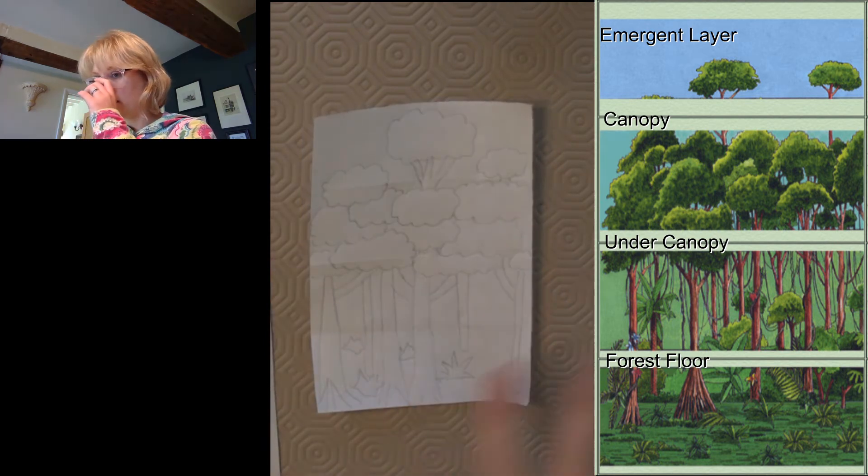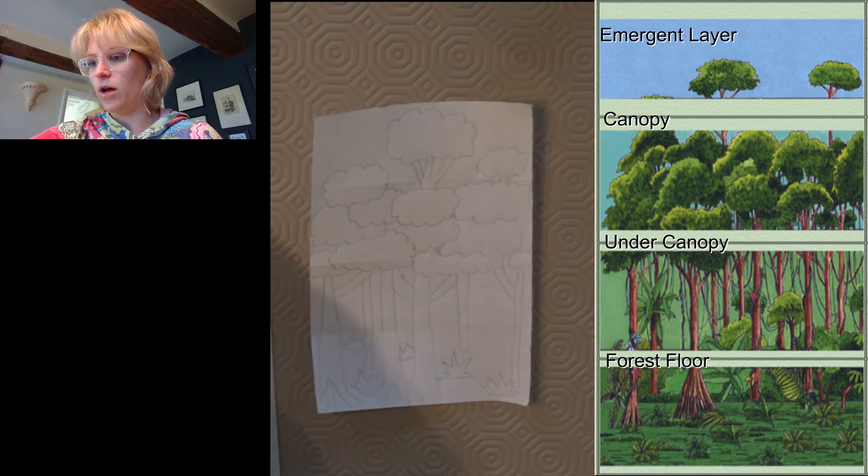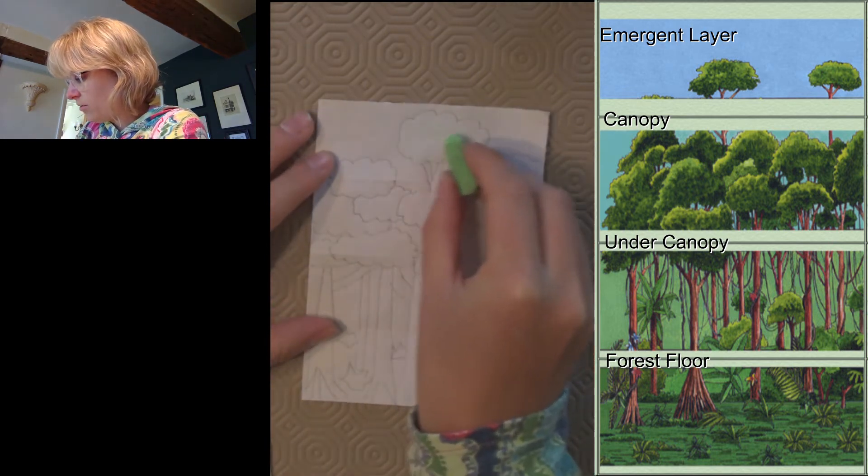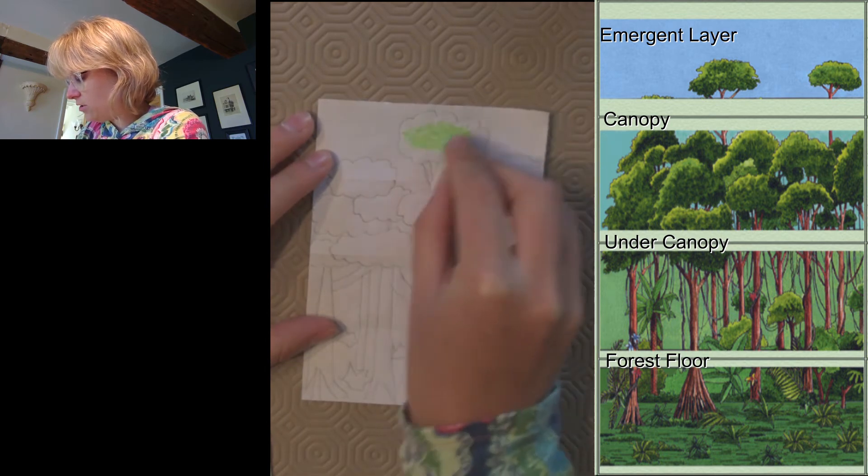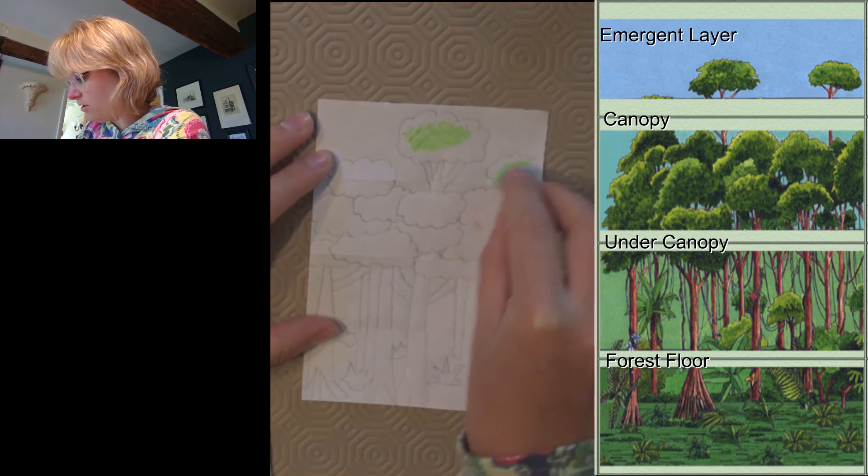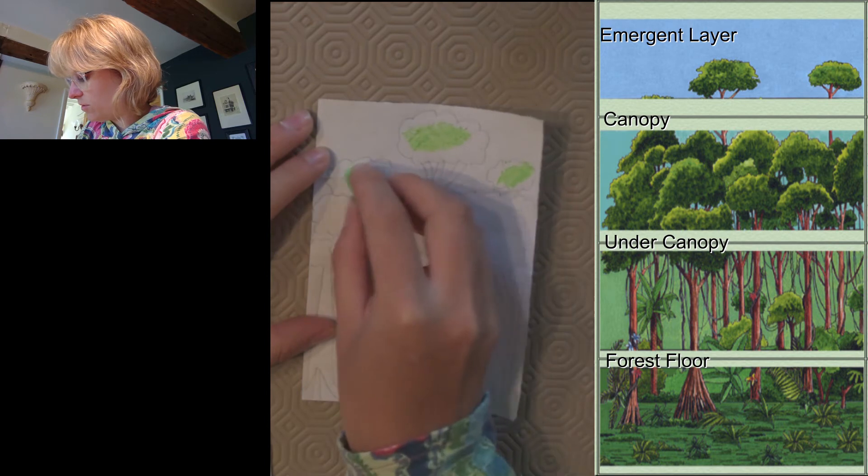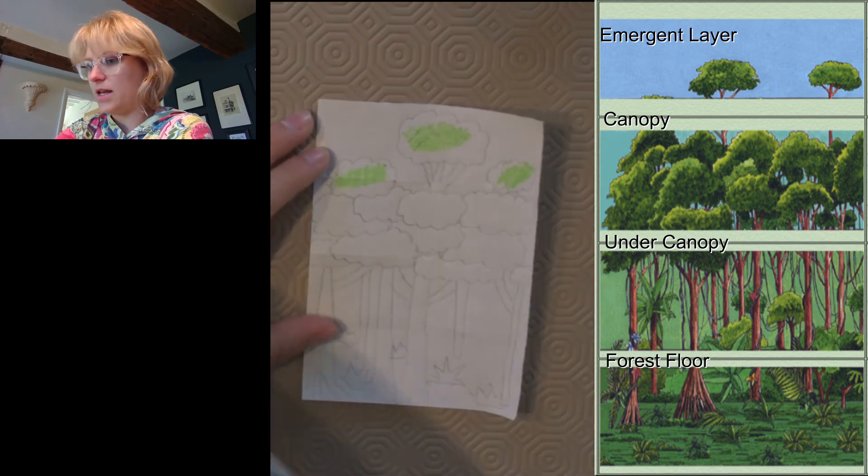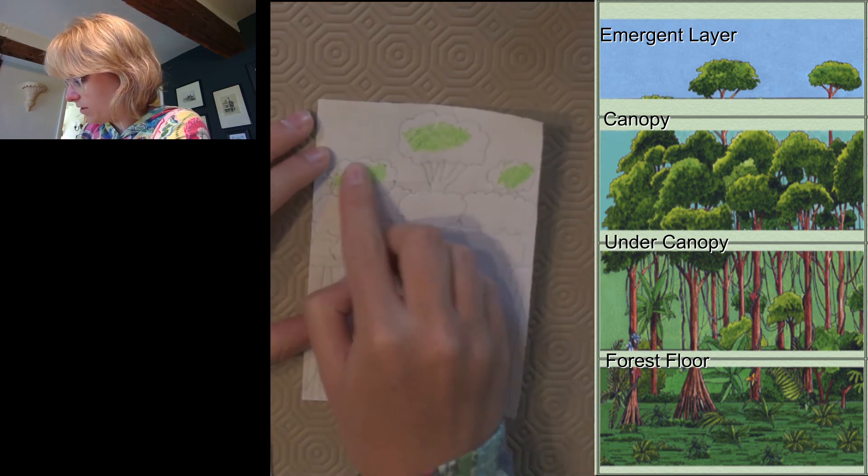So then you might like to color it in, and I've got some chalk pastels here, which are great because you can just put a little bit of color on. You don't need to worry too much about getting close to the lines and then use your finger to smudge it.